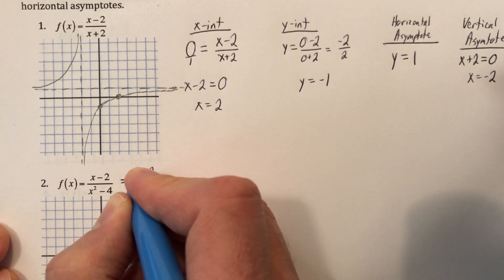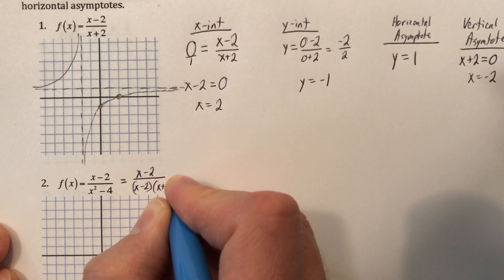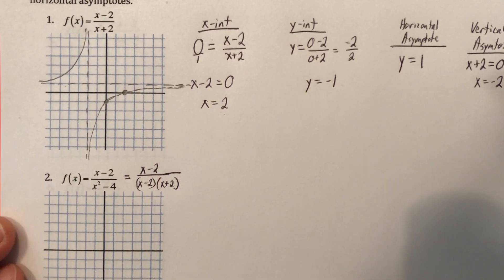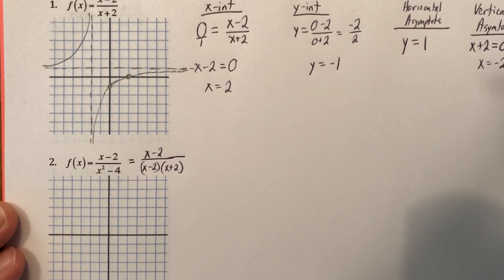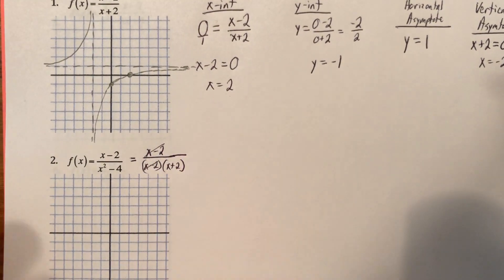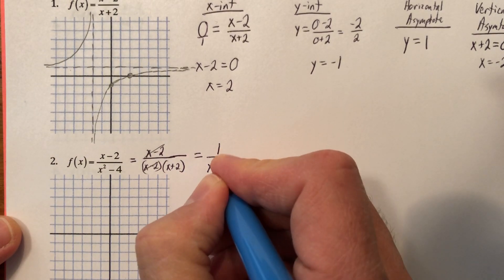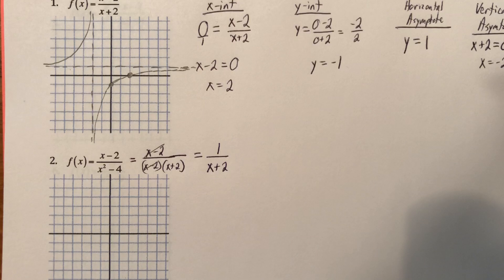So x minus 2 is the numerator. The denominator is x minus 2 times x plus 2. And if you look at that long enough, you'll realize what you could do. And I can cancel out x minus 2, right? And when I do that, I'm left with 1 over x plus 2. All right, cool. Fantastic.